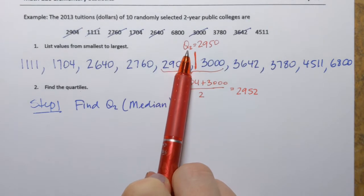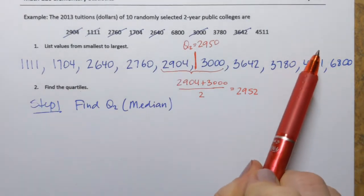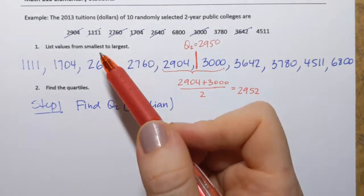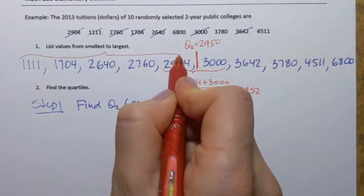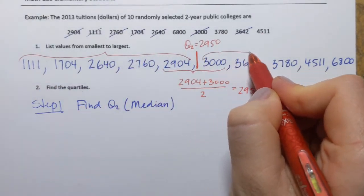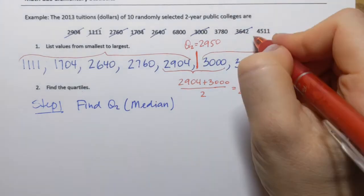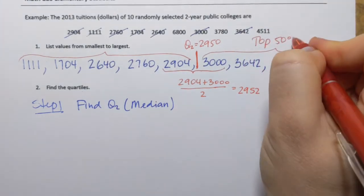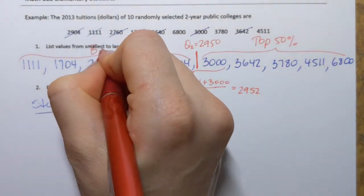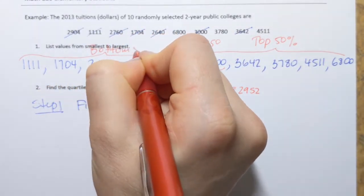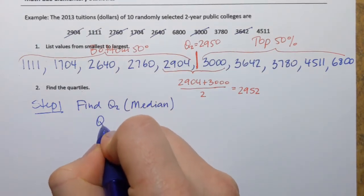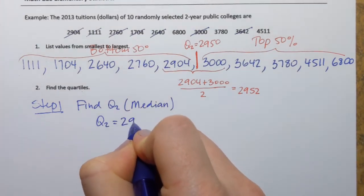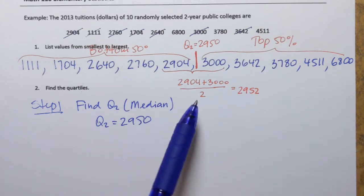And Q2, or median, splits the entire data set in two parts. So it's basically the bottom 50% of the data set and the top 50% of the data set. This is bottom 50%. Before I move on, I need to write down here that Q2 is 2,950. Now let's move on.